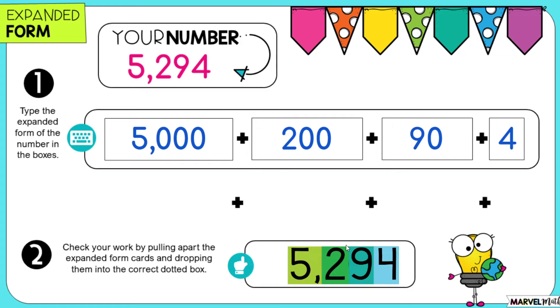Now what I can do is I can check my work using these expanded form cards down below. So I'm going to click on the first one, and I'm going to drag it over here. And you can see that we got the value of the 5 correct. It's 5,000.